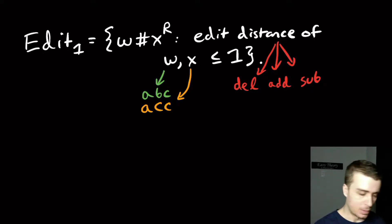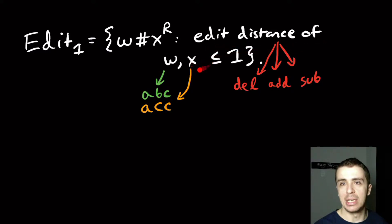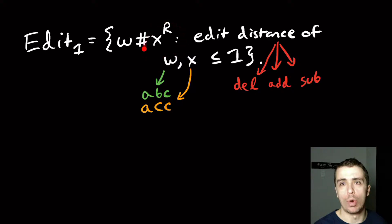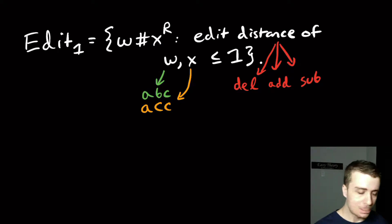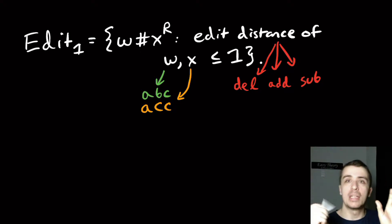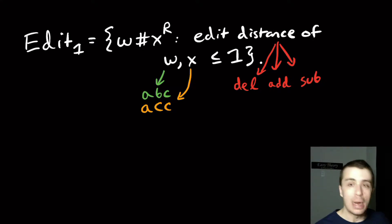I want to talk about this problem called Edit One, which is the set of all strings w pound-sign reverse(x) where the edit distance of these two strings is at most one — and the reverse applies to one of the two pieces. Edit distance comes from computational biology: the idea is that we have two strings and we can delete, add, or substitute a character to try to get from one to the other.